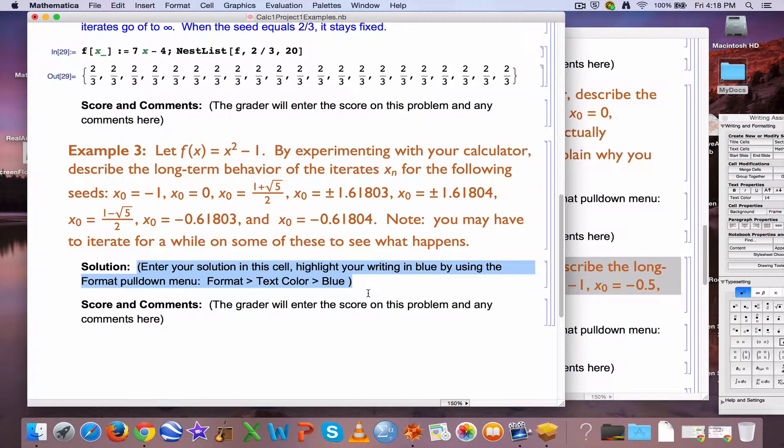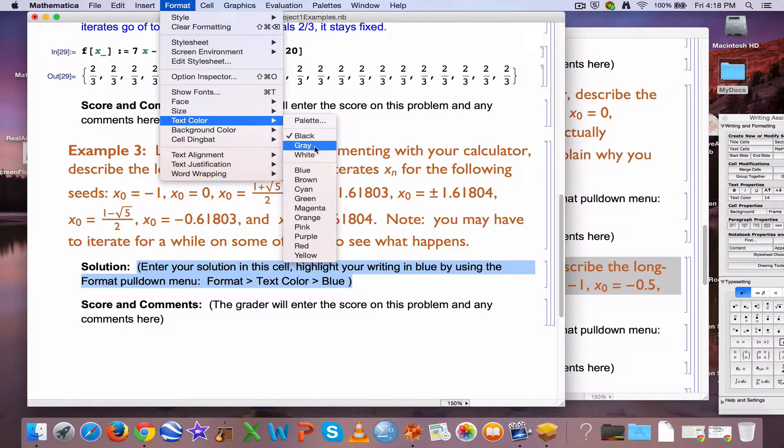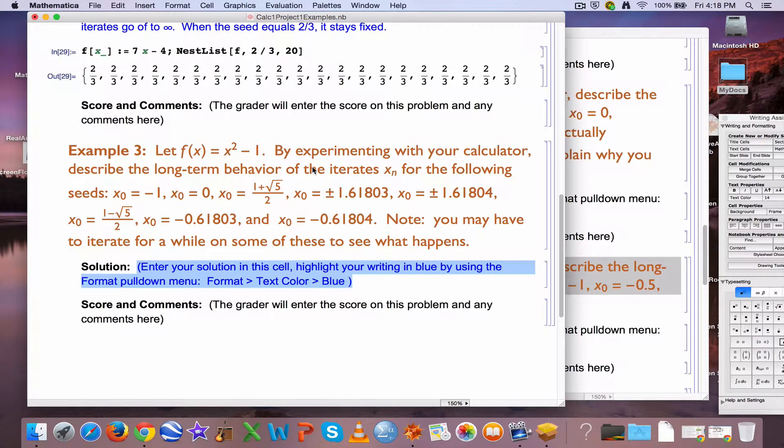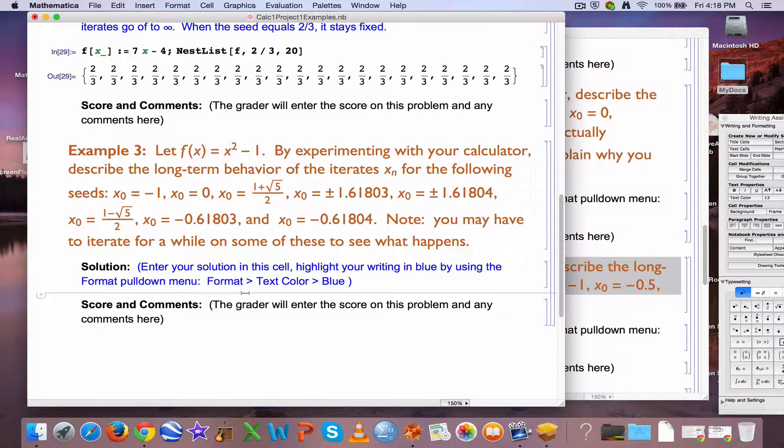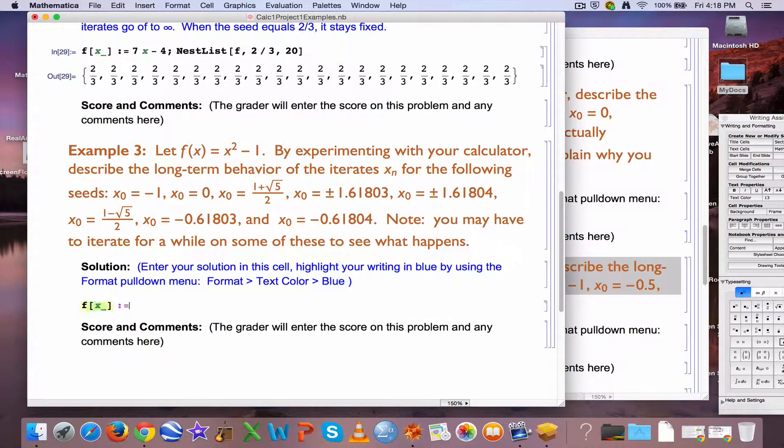You'll be describing what happens in a slot like this in words. And again, you should highlight your words in blue so the grader can tell that it's what you wrote. All right, and as far as what I do, again, I'm going to use nestlist and Mathematica to see what happens here.